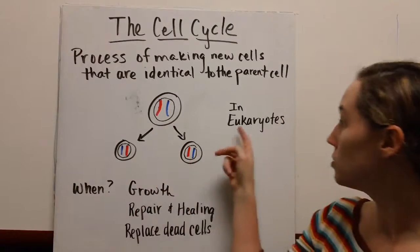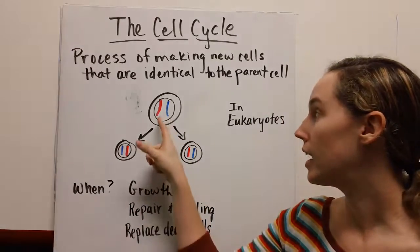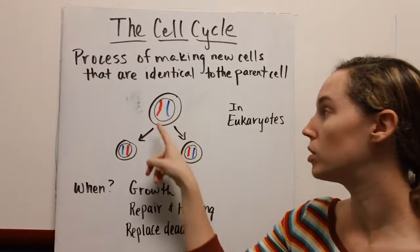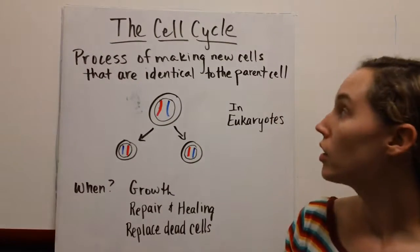You can see here we've got some eukaryotic cells with nuclei. These are animal cells. They have two sets of chromosomes, one from mom and one from dad, so these are diploid cells. We're going to make new cells during a few points.